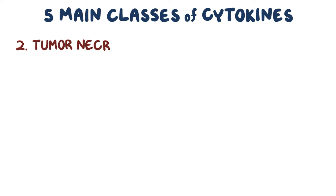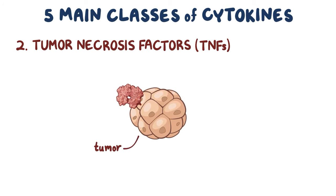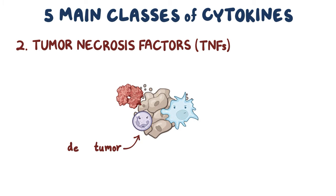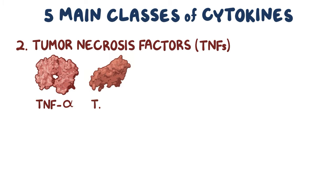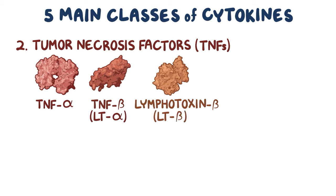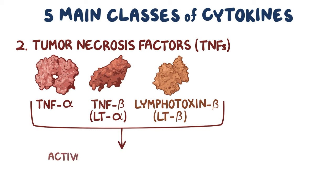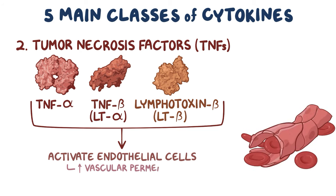The second group are the tumor necrosis factors or TNFs. TNFs are named because they were discovered by their ability to kill tumor cells, now known to be because they elicit inflammation and the inflammatory cells—neutrophils and macrophages—actually do the killing. Tumor necrosis factor alpha, tumor necrosis factor beta (also called lymphotoxin alpha or LT-alpha), and lymphotoxin beta or LT-beta are known to have a wide variety of biological effects in the inflammatory response, including activating endothelial cells to upregulate expression of adhesion molecules and increasing their vascular permeability.